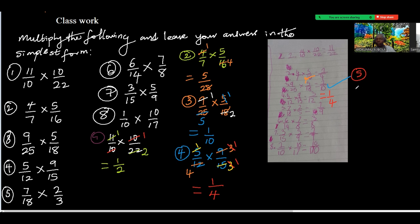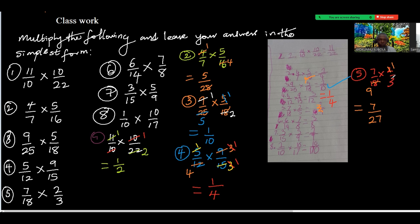Number five: 7 over 18 times 2 over 3. 2 can divide here giving 9, and nothing can divide again — so the answer is 7 over 27. You said 7 over 9 but it should be 7 over 27 because you still multiply with the 3.